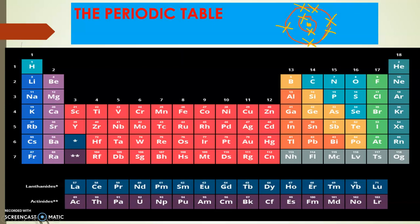For oxygen to be stable, it needs to accept two more electrons, and then there will be eight electrons in the outer shell. So if we write it using figures, the electronic configuration of oxygen is 2 and 6. That's how we do it.